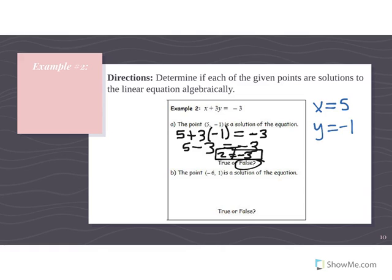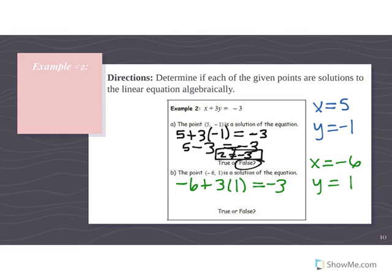For part B with x = -6 and y = 1: plug in -6 for x and 1 for y. We get -6 + 3(1) = -3, which gives -6 + 3 = -3. Negative 6 plus 3 really does equal -3 — leave the equal sign alone, box it, and mark it true.